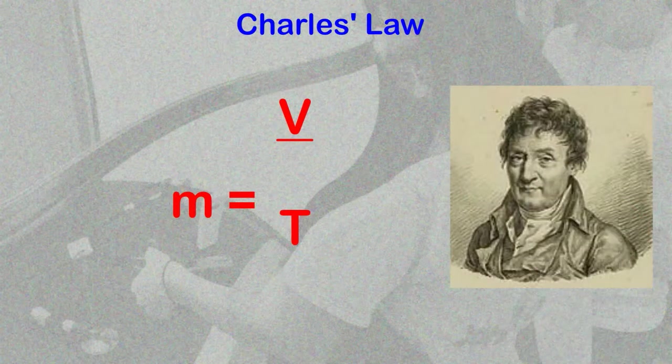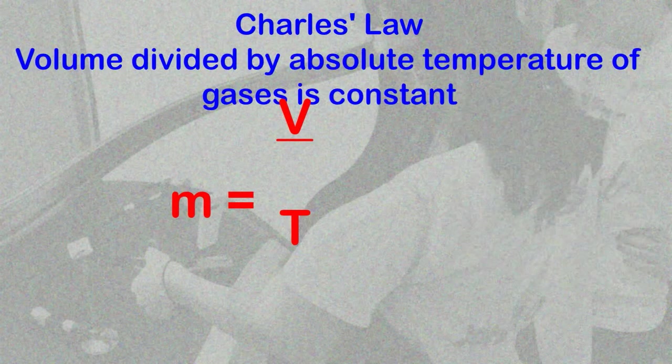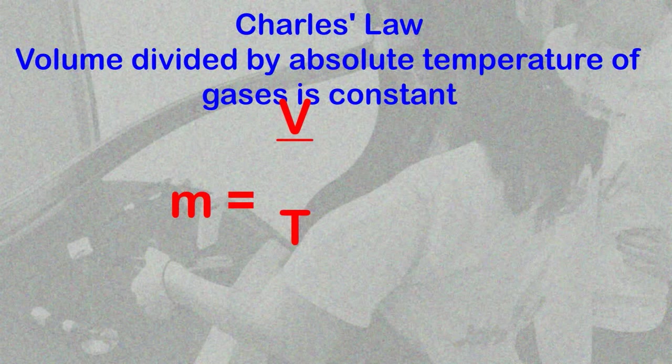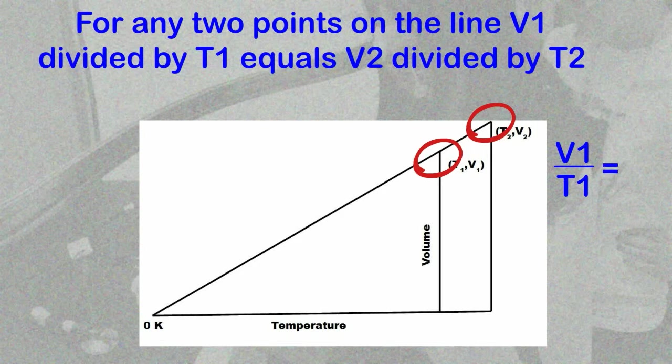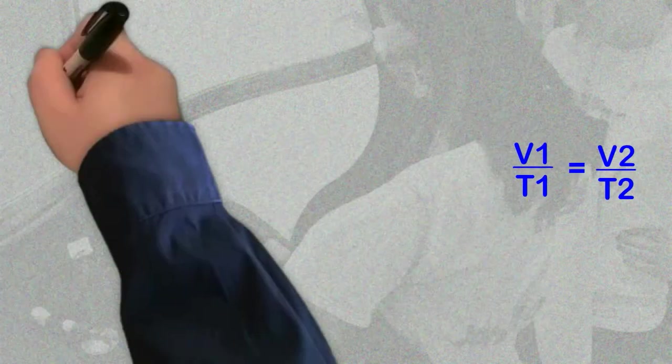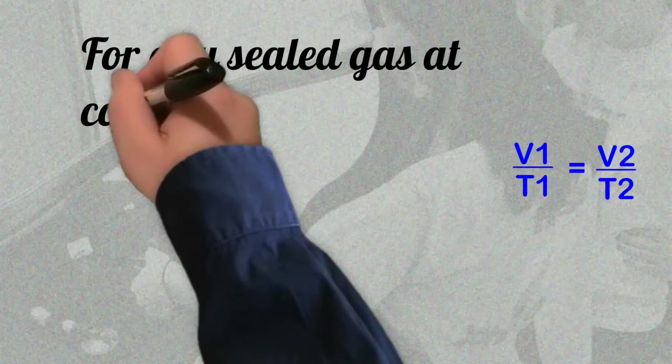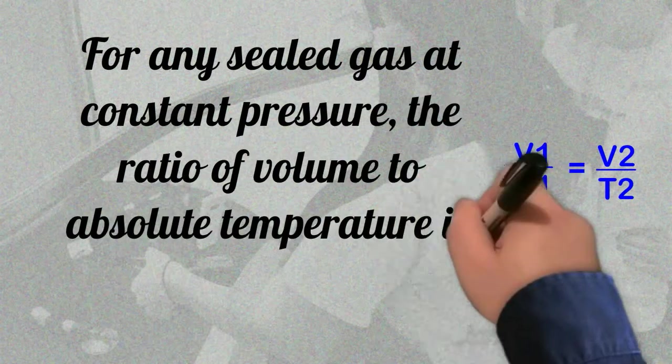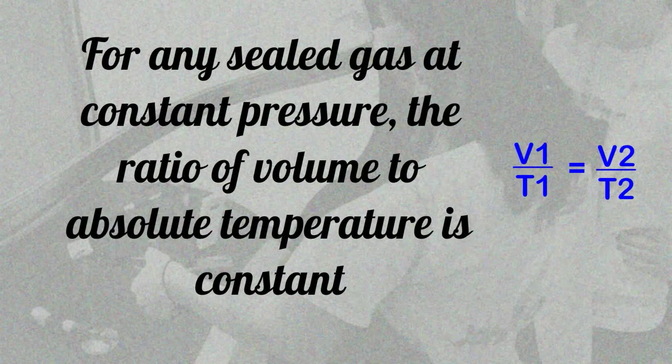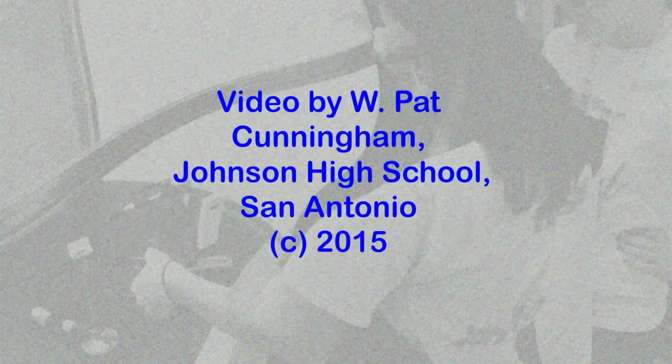Volume divided by absolute temperature of a gas is a constant, and for any two points on this line, V1 over T1 equals V2 over T2. This is true for any sealed gas at constant pressure. The ratio of volume to absolute temperature is always constant.